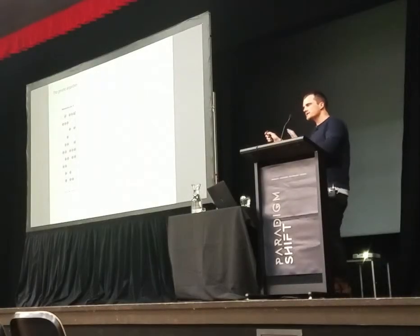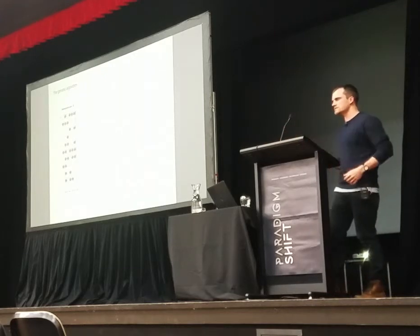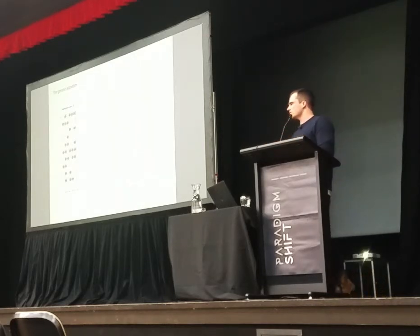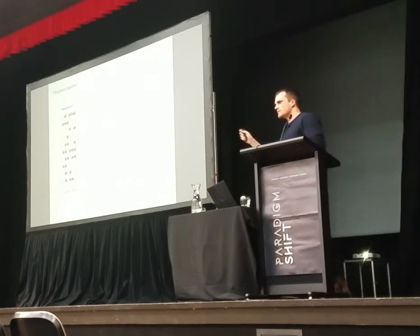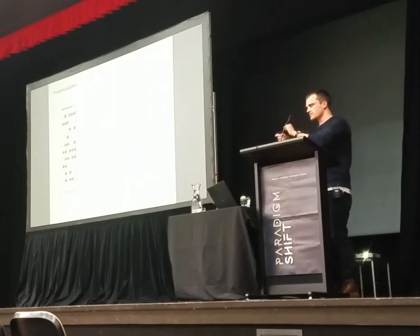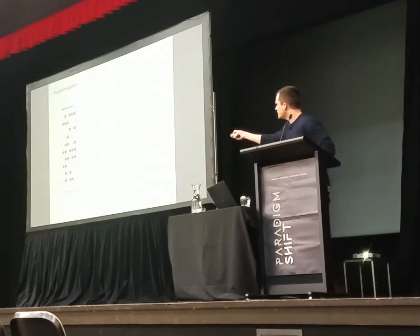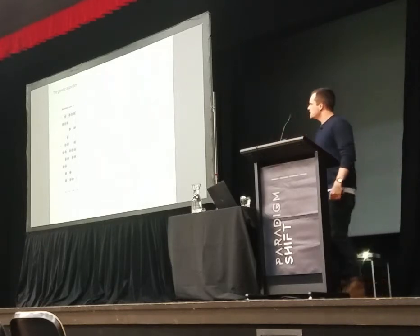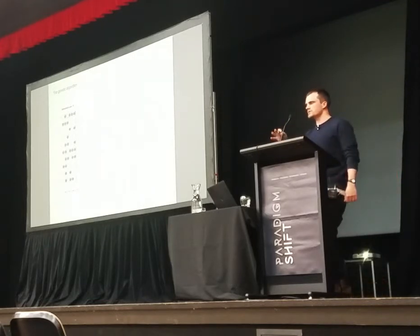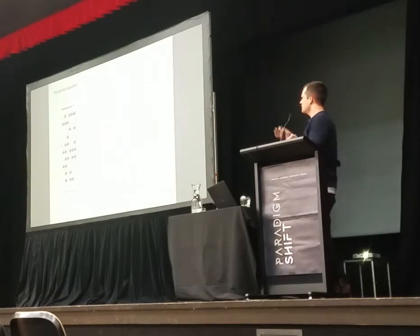This is what the computer sees — it doesn't know anything about form or function; it just sees inputs and outputs. Here we have six binary inputs — just switches the computer can flip on and off — and a single output box. This number tells the computer which designs are good and which are bad. In this case, higher numbers equal better designs.